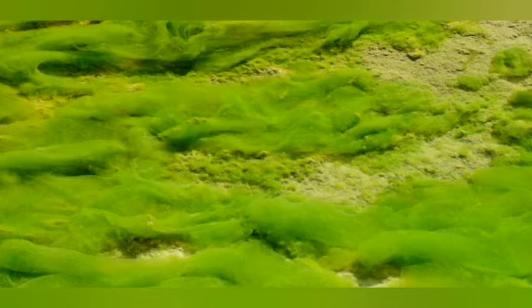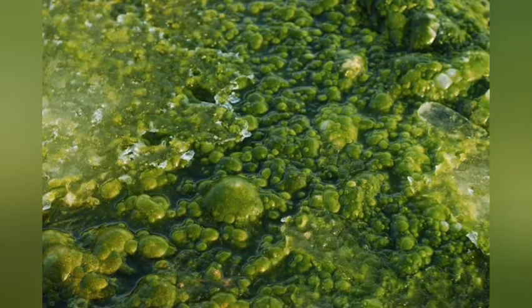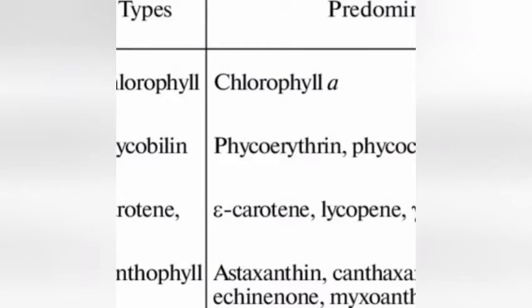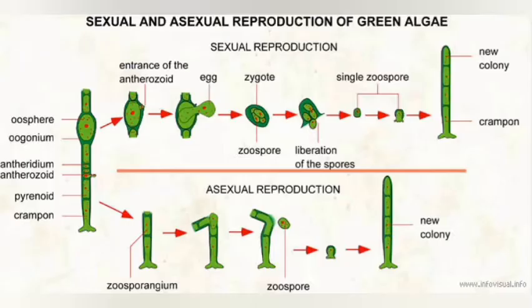The major classes of photosynthetic pigments occurring among Algae include chlorophylls, carotenoids, and phycobilins. We are also going to see the different predominant types of pigment: Chlorophyta has greenish pigment, Rhodophyta simply means red pigment, and Cyanophyta which is bluish. Dear students, I think you have heard about these predominant types. Let us move on to the reproduction of Algae.